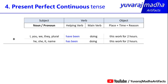Basic structure example: 'I have been doing this work for two hours.' We can also say: 'We have been doing this work for two hours.' 'My friends have been doing this work for two hours.' 'He has been doing this work for two hours.' 'She has been doing this work for two hours.' 'Kiran or Osuma has been doing this work for two hours.'